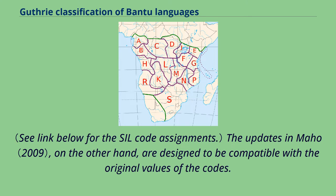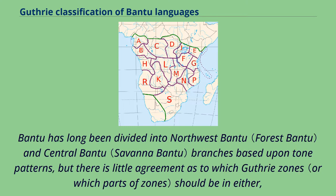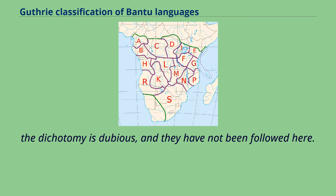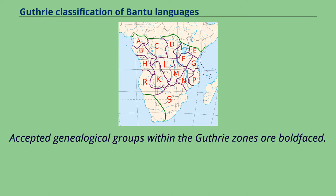The updates in Maho, on the other hand, are designed to be compatible with the original values of the codes. Bantu has long been divided into Northwest Bantu and Central Bantu branches based upon tone patterns, but there is little agreement as to which Guthrie zones should be in either. The dichotomy is dubious, and they have not been followed here. Accepted genealogical groups within the Guthrie zones are boldfaced.